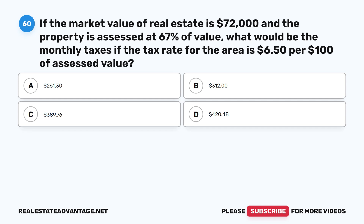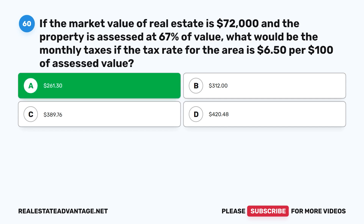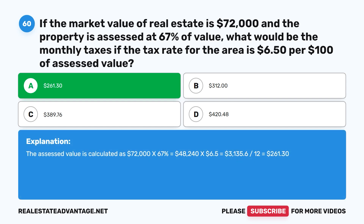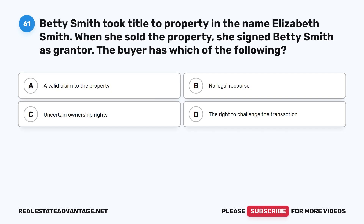Question 60: If the market value of real estate is $72,000 and the property is assessed at 67% of value, what would be the monthly taxes if the tax rate is $6.50 per $100 of assessed value? A. $261.30. B. $312. C. $389.76. D. $420.48. The correct answer is A: $261.30. Assessed value = $72,000 × 67% = $48,240. Annual tax = $48,240 × $6.50 / $100 = $3,135.60. Monthly = $3,135.60 ÷ 12 = $261.30.